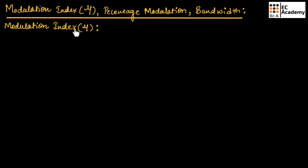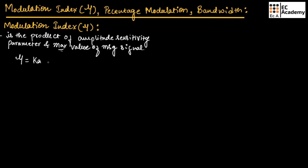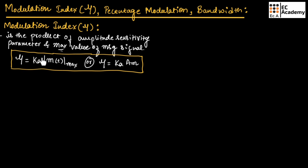Modulation index is the product of amplitude sensitivity parameter and the maximum value of the message signal. We can write modulation index equal to KA multiplied by the maximum value of the message signal, or as KA into Em. Here, KA is the amplitude sensitivity parameter, and Em (or M(t) maximum) is the amplitude of M(t), which is the message signal.